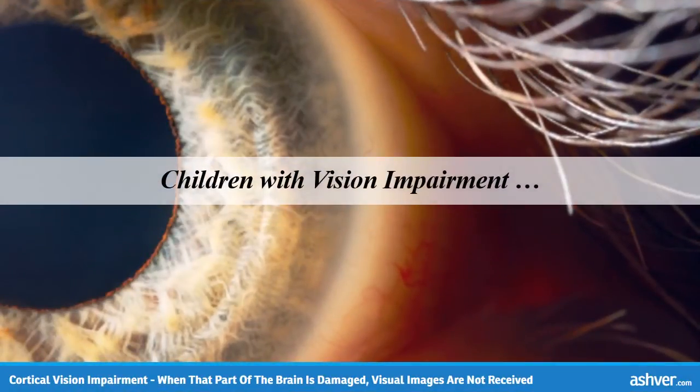Children with CVI usually have other optical conditions. All of these conditions may also fluctuate depending on several factors such as fatigue, illness, and medications.